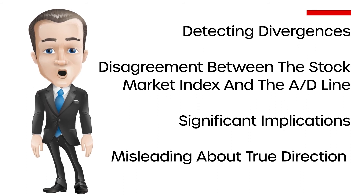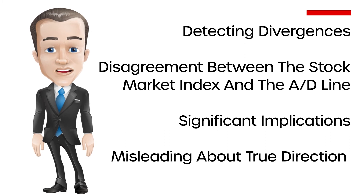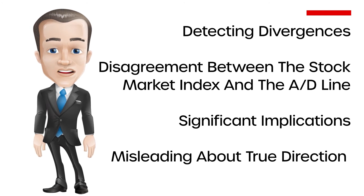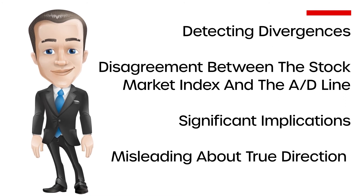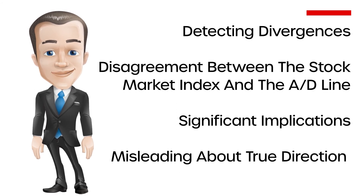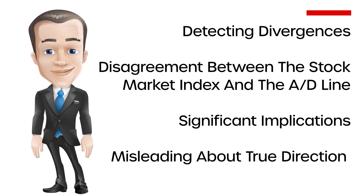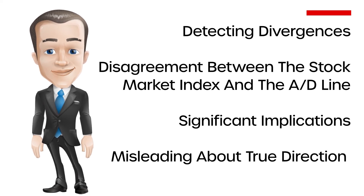Detecting divergences: divergence is a disagreement between the stock price index and the AD line and can have significant implications for investment management. If the index moves up while the AD line moves down, the index may be misleading about the true direction of the overall market. Such negative divergences have occurred at major market turning points, such as the end of the roaring 20s bull market, during 1972 at the height of the nifty 50 market, and most notably just prior to the 2008 bear market. Identifying divergences can help investors recognize and react to changes in price action.